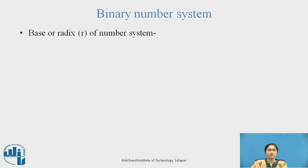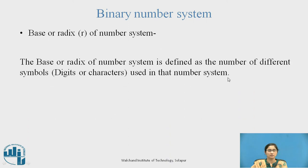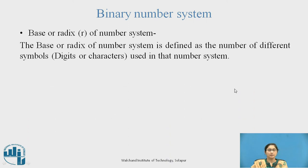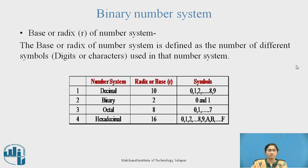Binary Number System. The base or radix, represented as r, of the number system is defined as the number of different symbols — i.e., digits or characters — used in that system. Here, four types of number systems are shown.